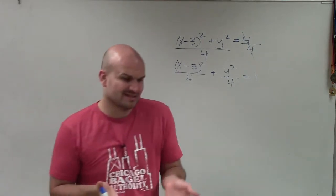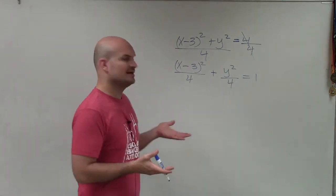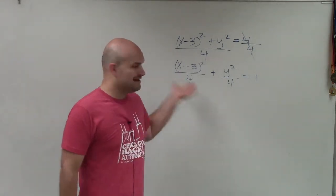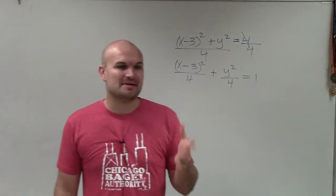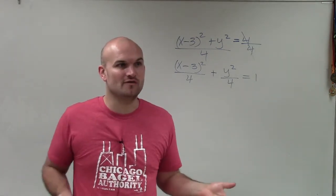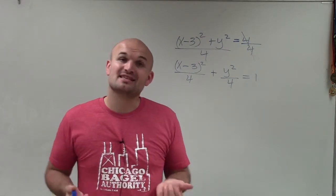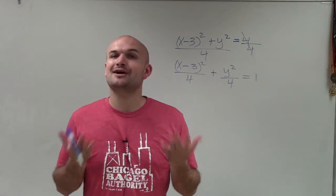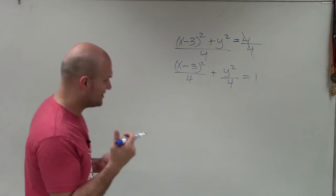And the issue that comes in with this is you could say that, very interesting, my a and my b are exactly the same. That means the distance from the vertices to the covertices is going to be exactly the same. So therefore, this ellipse is actually going to be a circle.